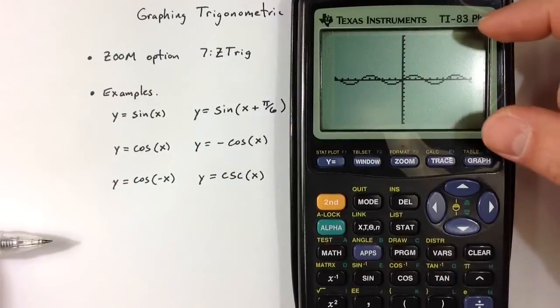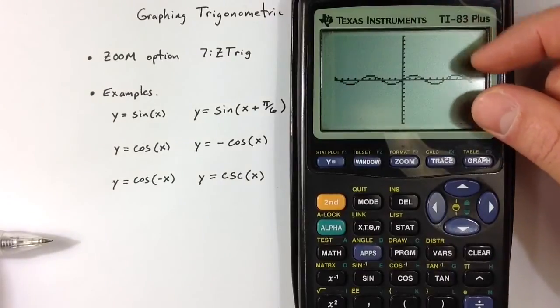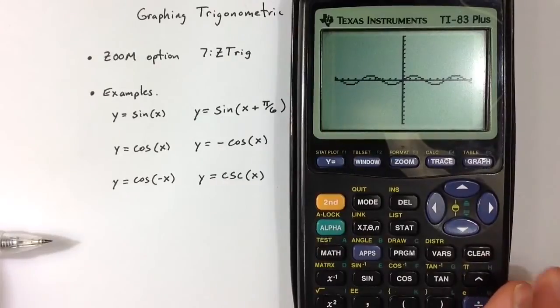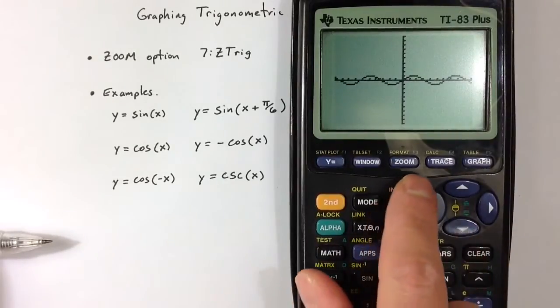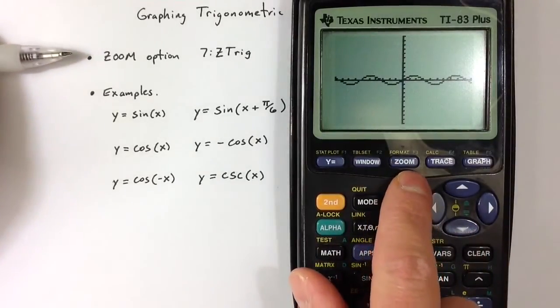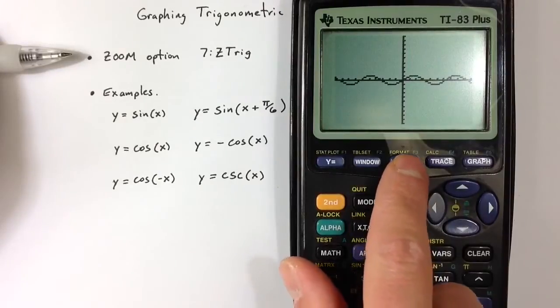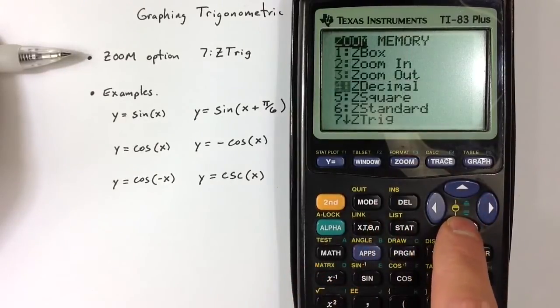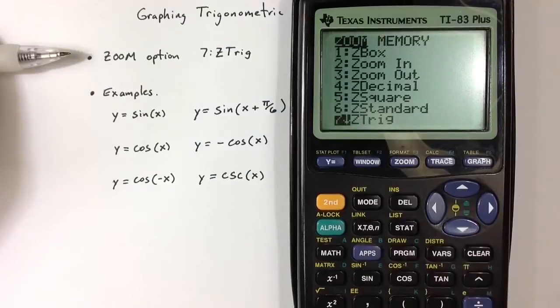But it does kind of squish the sine function pretty small and gives us maybe more than we would want to see. So there is another zoom option. The trig zoom option is option 7, and as the name suggests, it works pretty well for trig functions.